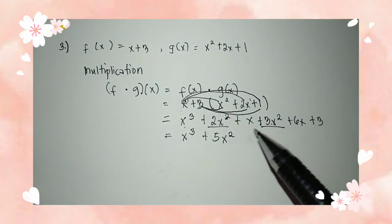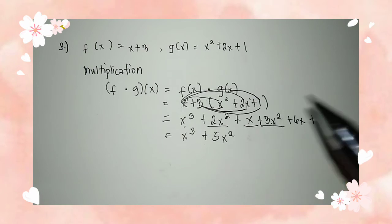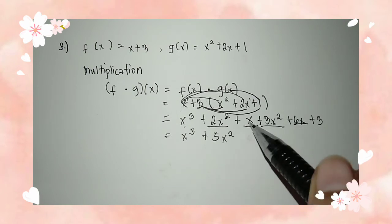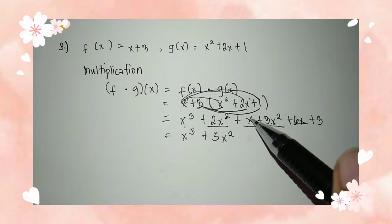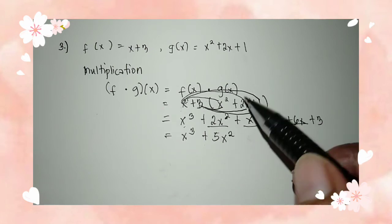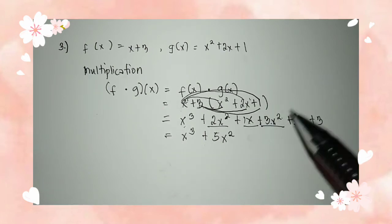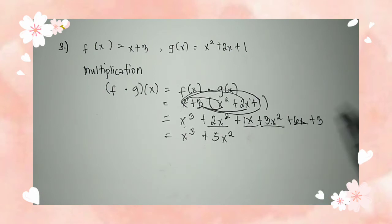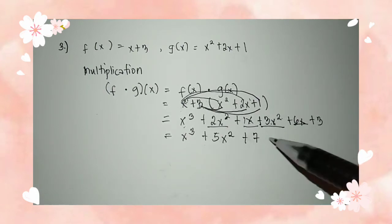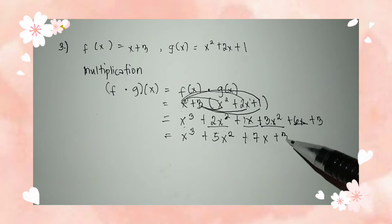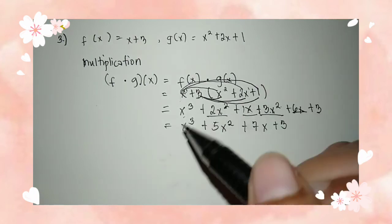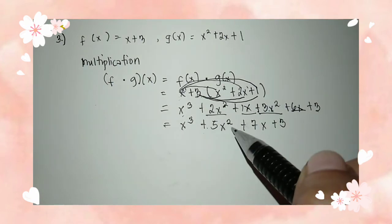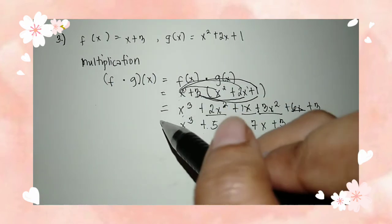Then x and 6x are like terms since they have the same variable. When there is no coefficient, it is automatically 1. So 1 plus 6 equals positive 7x. Then plus 3, since it has no like term, we just copy it. So the answer is x cubed plus 5x squared plus 7x plus 3.